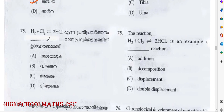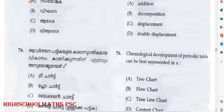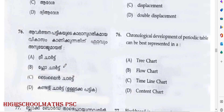H2 + Cl2 gives 2HCl. Answer: Option A — this is an Addition Reaction example.